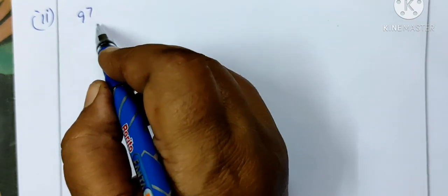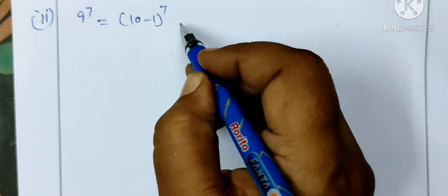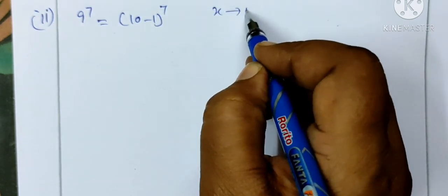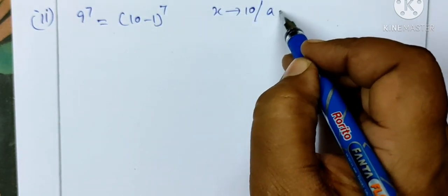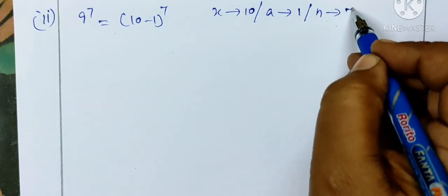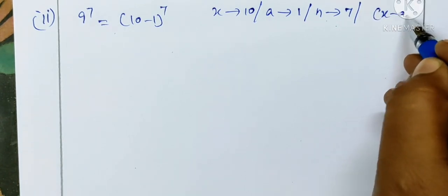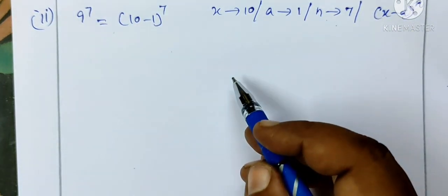Next one is 9 power 7. So 9 power 7, you can write as (10 minus 1) whole power 7. So here x is 10, then a is 1, then n is 7. Here we use the formula x minus a whole power n, this is minus 1.